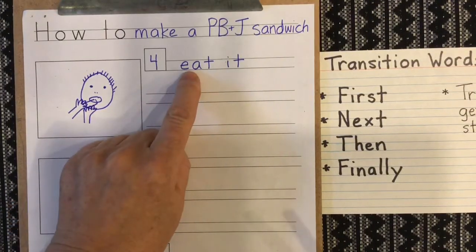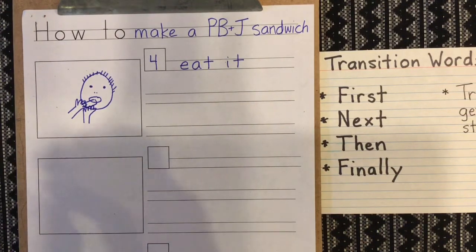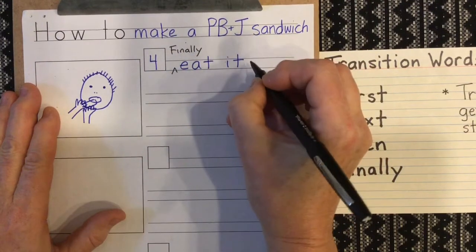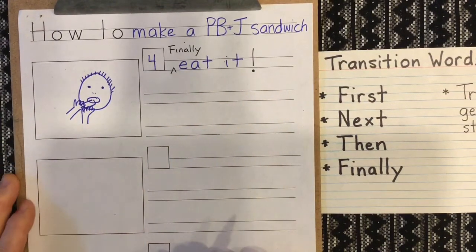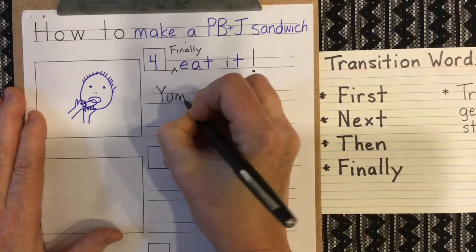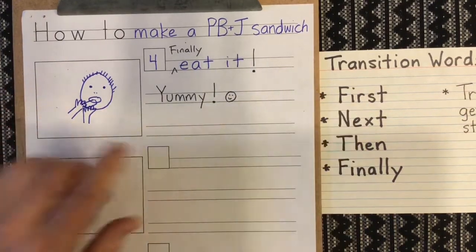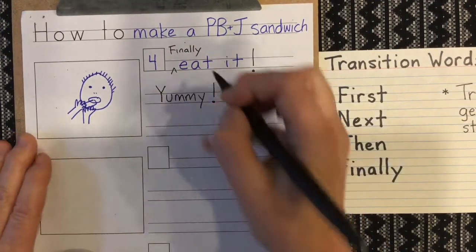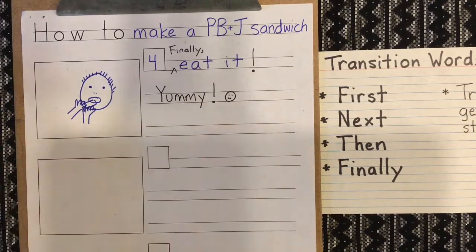Okay, last step — there I am enjoying my yummy sandwich, and I wrote 'eat it.' What transition word would work here? 'Finally!' So let me put a little caret there — 'Finally eat it.' Oh, maybe I'm going to give it some oomph — 'Finally eat it, yummy!' And I could even put a smiley face in my writing. I think I need a little comma here because when I say it I pause — 'Finally eat it, yummy!'